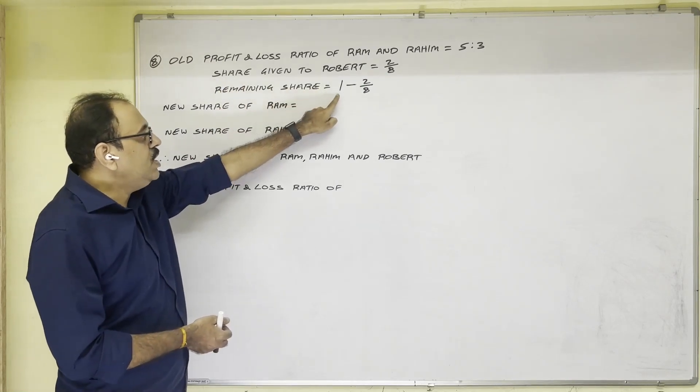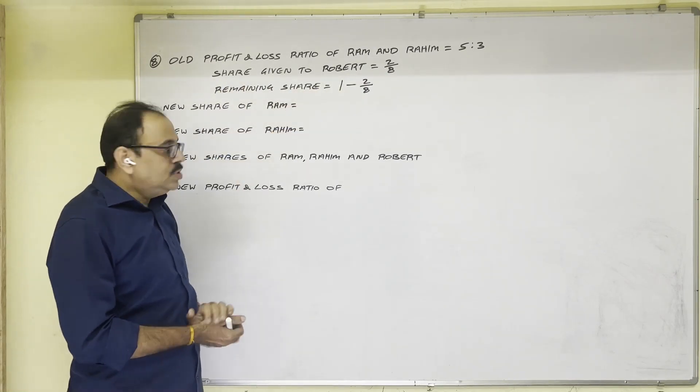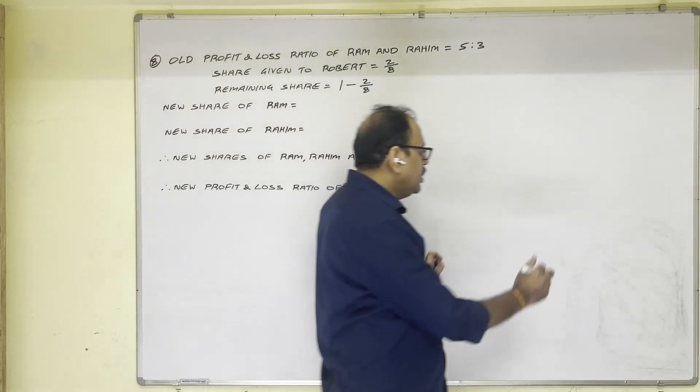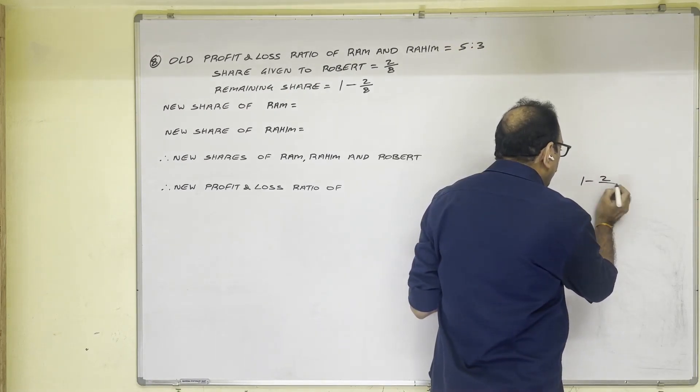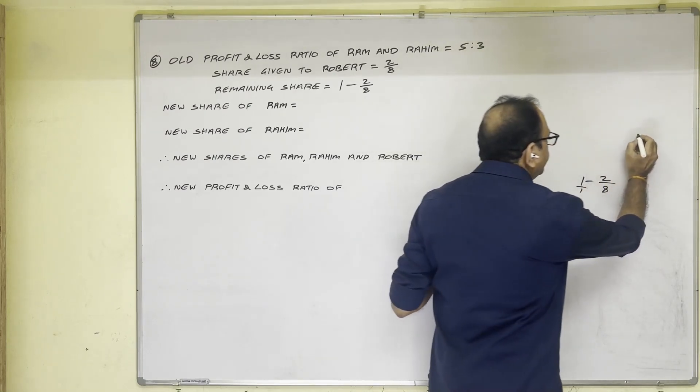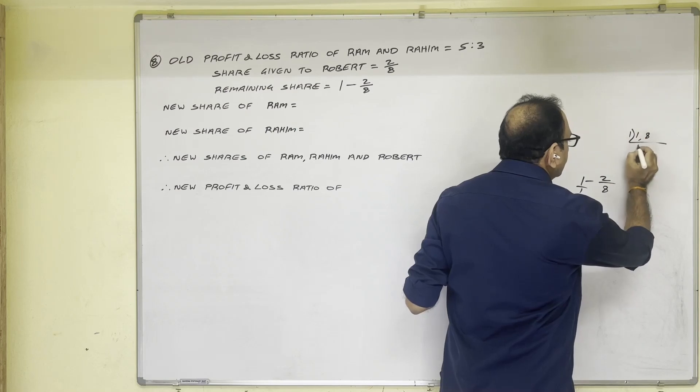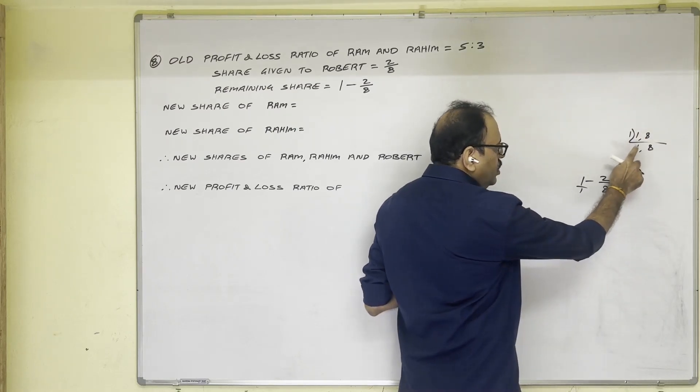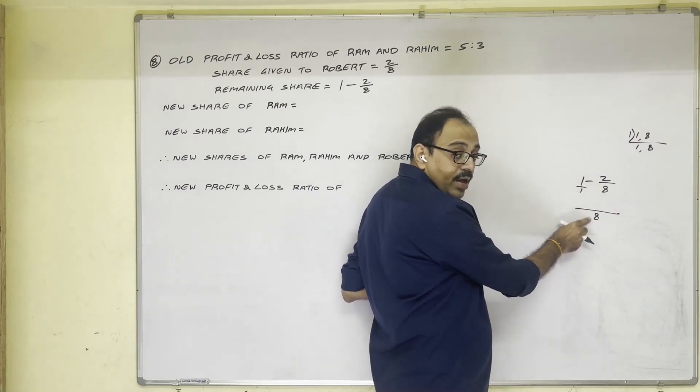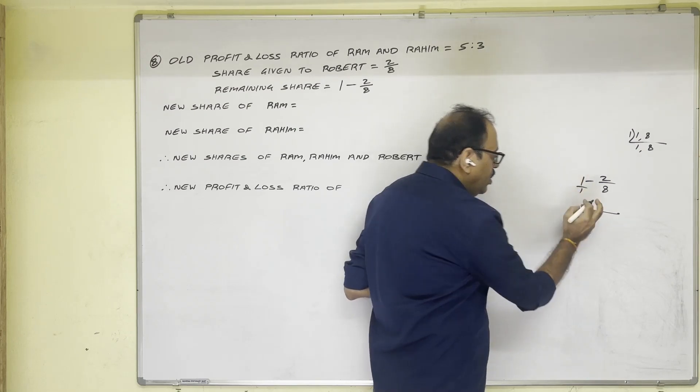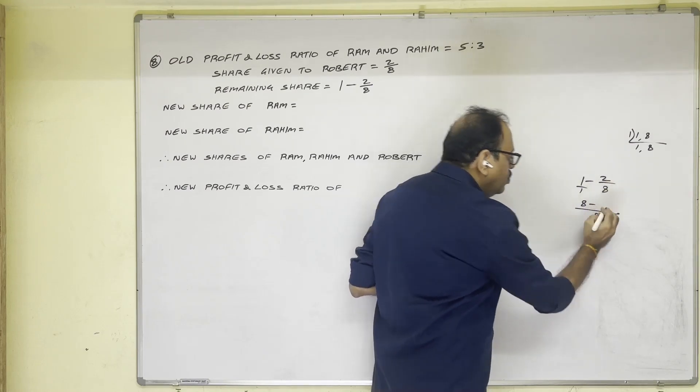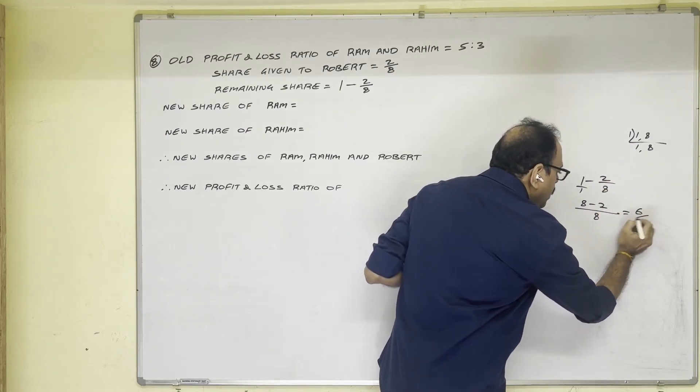Remaining share is equal to 1 minus 2/8. So actually speaking we should calculate LCM, further I will show the LCM here. 1 minus 2/8. So here 1 by 1 is. 1 and 8, LCM is. 1 into 1, 1, 1 into 8, 8. 1, 8 is 8. 8 into 1, 8. Minus. 8 ones are 8. 1 into 2, 2. Is equal 6 by 8.